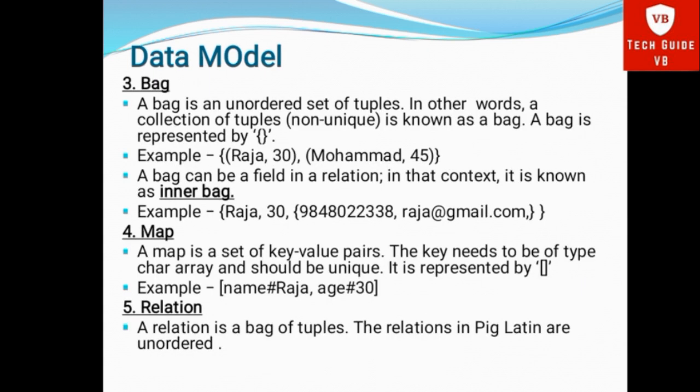Third, Bag. A Bag is an ordered set of Tuples. In other words, a collection of Tuples — non-unique — is known as a Bag. A Bag is represented by curly brackets. For example, {(Raja, 30), (Mumbai, 45)}. A Bag can be filled in a relation, and its contents are known as an Inner Bag. For example, {(Raja, 30, {Phone Number, Email ID})}.